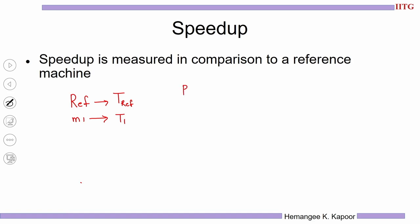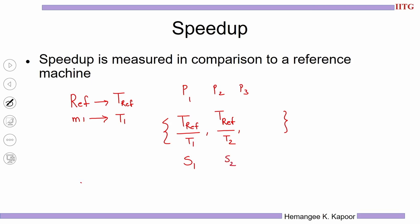For every program p1, p2, p3 and so on, we compute the execution time and compare it with the reference machine. The speedup is t_ref divided by t1 for program p1, t_ref divided by t2 for p2, and so on. This fraction is called speedup — s1 is the speedup of program 1 with respect to the reference machine, s2 for program 2, and so on up to sm.